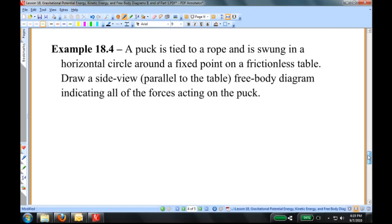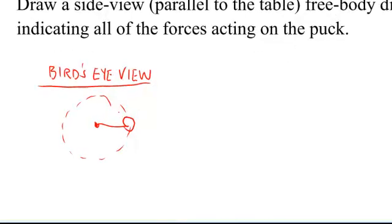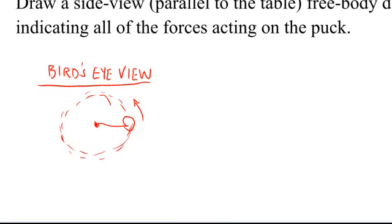Let's go to the next example. The next example says I've got a puck tied to a rope and the puck is swung in a horizontal circle around a fixed point on a frictionless table. We want to draw a side view parallel to the tabletop free body diagram indicating all the forces acting on the puck. In these sorts of problems, I often find it helpful to make a top view and a side view, a bird's eye view, so to speak. So what's going on here? Imagine I've got an air hockey table that's got a hole cut in it, and I've got a rope that's strung attached to a puck, and the puck is going around and around on the surface of the air hockey table in a circular path around this hole that's cut in the table.